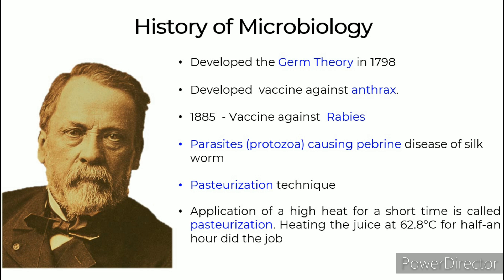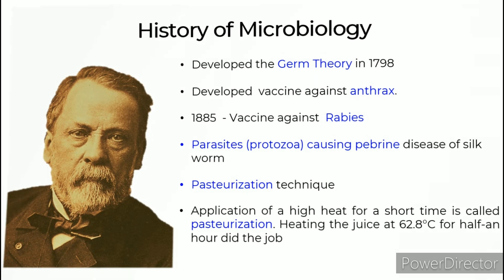Pasteur developed a vaccine against anthrax and a vaccine against rabies in 1885. He discovered the parasites causing pébrine disease of silkworms. Pasteurization technique: Pasteur demonstrated that bacteria producing acetic acid spoil wine by turning it into vinegar. Spoilage bacteria could be killed by heat not hot enough to evaporate the alcohol. This application of high heat for a short time is called pasteurization — heating juice at 62.8°C for half an hour.